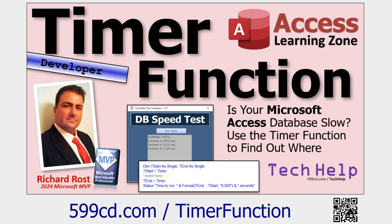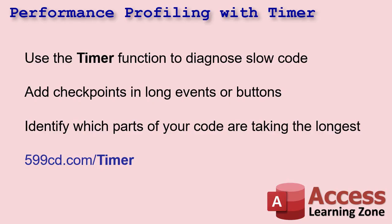In yesterday's video, I showed you about the timer function and how you can use it to figure out what parts of your code are causing slowdowns. If you've got a long OnCurrent event or lots of code in a button, you can put timer statements in there to see which lines of code are taking the longest — this one's four seconds, this one's two seconds and so on. Then we can optimize those, and today we're going to start optimizing stuff.